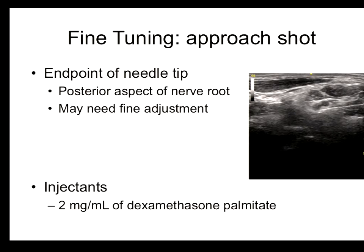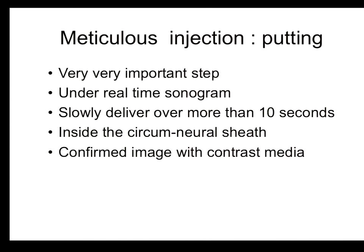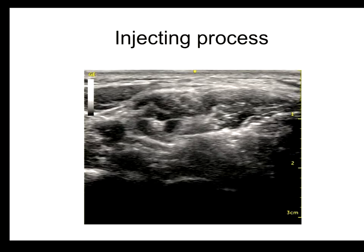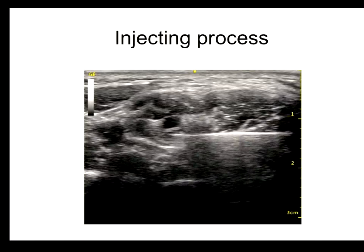After finding the root, approach the needle behind the root and make fine adjustments before injecting the steroid. The final step is very important — the actual injection. This must be done under real-time ultrasonography and the injection should be delivered over more than 10 seconds. You must inject inside the circumneural sheath and confirm the result with an X-ray image using contrast. After inserting the needle behind the nerve root, find the circumneural sheath and adjust the injection slowly and very carefully.